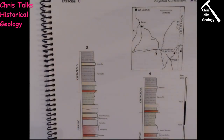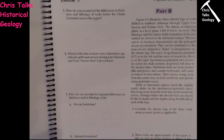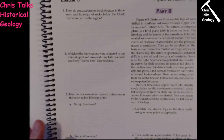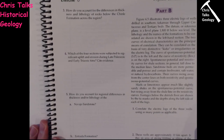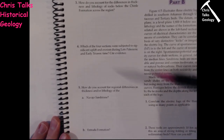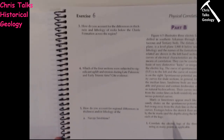To summarize: you're going to correlate Column 1 to Column 2, Column 2 to Column 3, and Column 3 to Column 4. Then there are some follow-up questions.